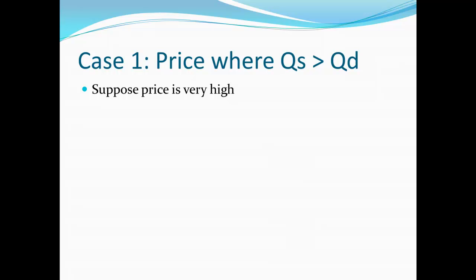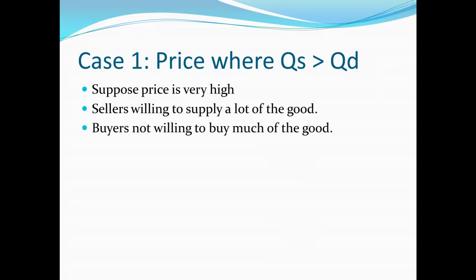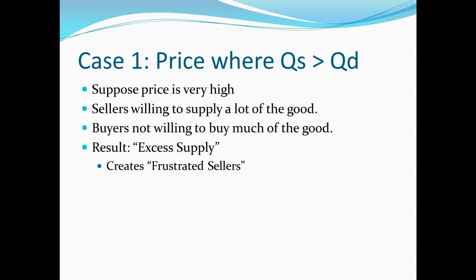This happens when the price is very high. At a very high price, sellers are very willing to supply a lot of the good — the law of supply tells us that, since it's very profitable to provide a good at a high price. However, if the price is very high, buyers aren't willing to buy very much. This creates a situation where quantity supplied may exceed quantity demanded, which we call excess supply. That is, sellers really want to provide the good, but nobody wants to buy it at that particular price.